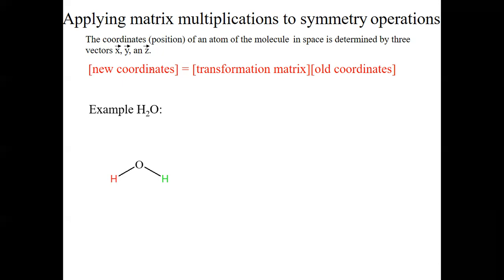For example, consider a molecule like H₂O, which belongs to the point group C₂v. We can define coordinates where x points to the right, z points to the top, and y stands perpendicular to that. Any point within the molecule can be expressed by three vectors x, y, and z that when added together point to that particular point in space.